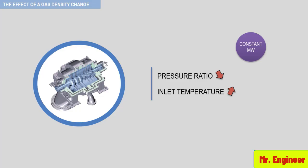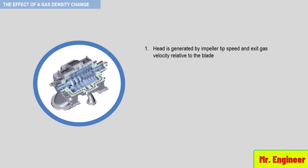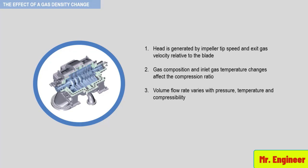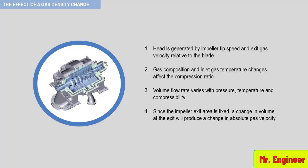The effect of a gas composition change on head is assumed to be such that once an impeller is designed, it will remain constant. This is not entirely true for an impeller working on a vapor, because head is generated by impeller tip speed and exit gas velocity relative to the blade. Gas composition and inlet gas temperature changes affect the compression ratio. Volume flow rate varies with pressure, temperature, and compressibility. And since the impeller exit area is fixed, a change in volume at the exit will produce a change in absolute gas velocity and gas tangential velocity. Therefore, head does change slightly.